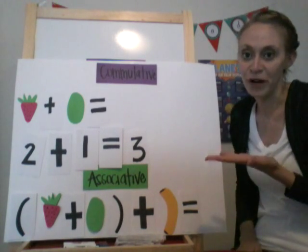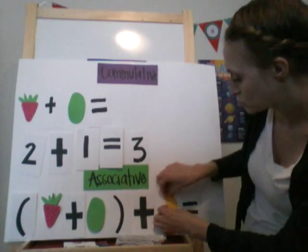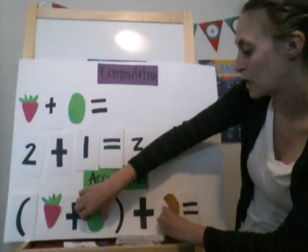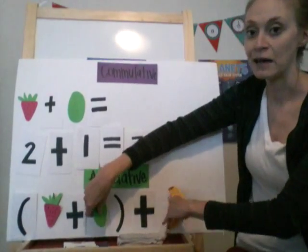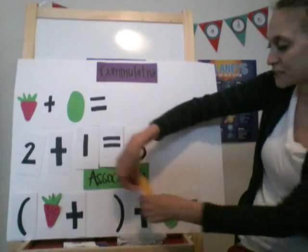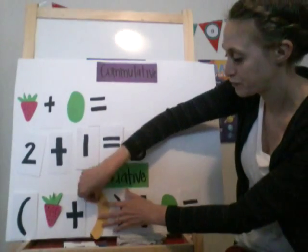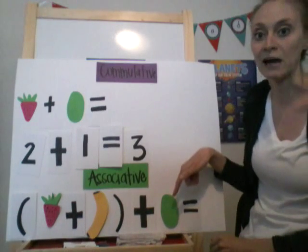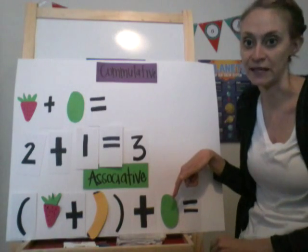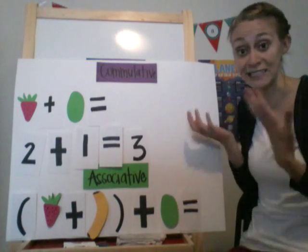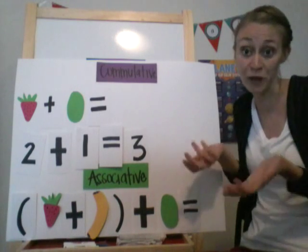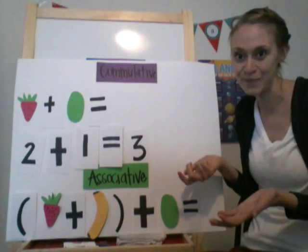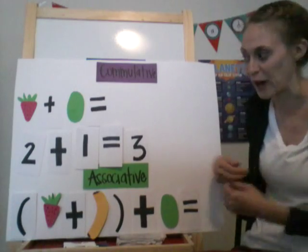What if we put it in a different order? What if I decided to add my banana in first — so I'm adding my strawberry and my banana, and then I add my kiwi on at the end? Does that change my answer? Does that change how much fruit I have or what kind of fruit I have? No, it doesn't. Let's try this with some numbers.